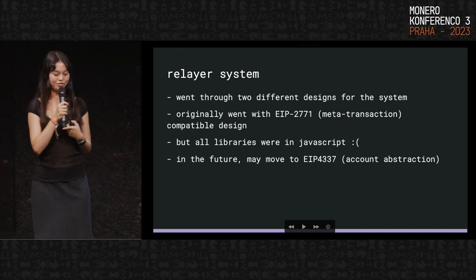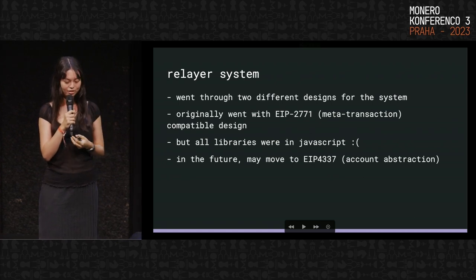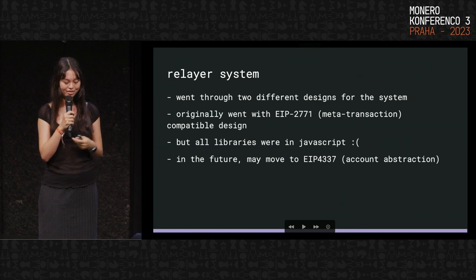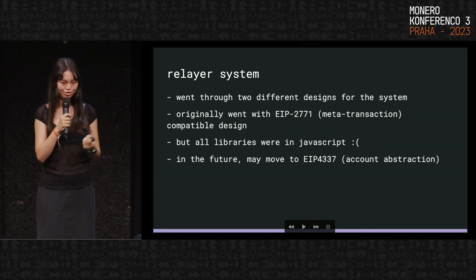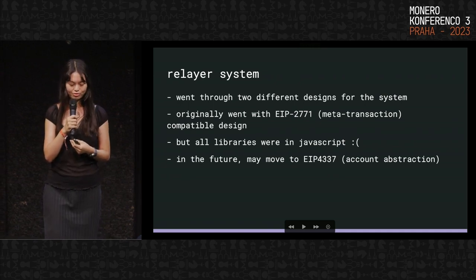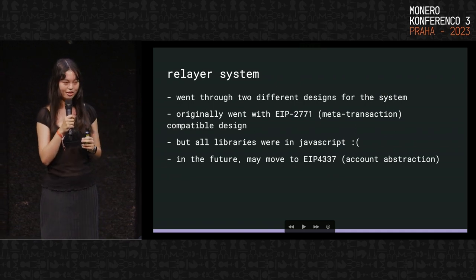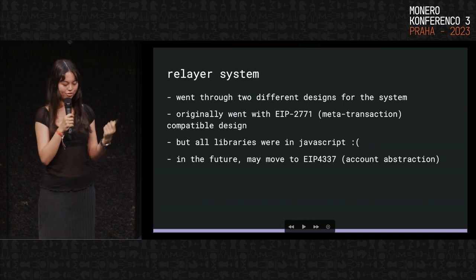We went through a few different designs for this. Originally went with a meta-transaction compatible design, but the libraries are all in JavaScript, and the code is written in Go. So we ended up implementing our own little system, which is a lot cleaner actually. In the future we may move to EIP-4337, which is account abstraction — kind of a standardized relay system — but it wasn't super ready at the time of launch, so maybe in the future.